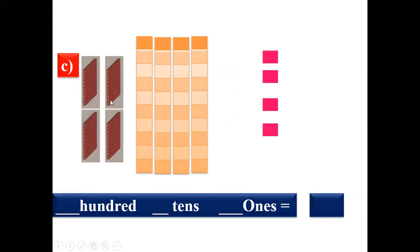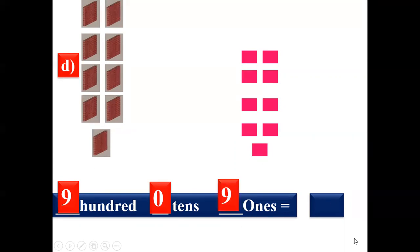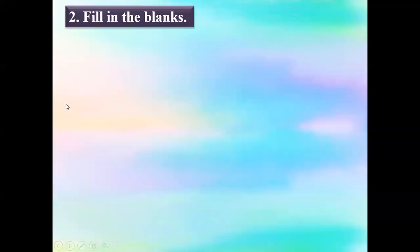Now look at the third one — one, two, three, four — four hundreds. And tens: one, two, three, four — four tens. And ones: one, two, three, four — four ones. So the answer is four hundred and forty-four. Now the fourth one — one, two, three, four, five, six, seven, eight, nine — nine hundreds. No columns for tens, so we write zero. And in ones we can see nine ones — single blocks. So the answer is nine hundred and nine.